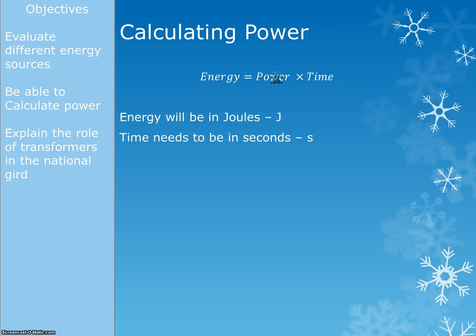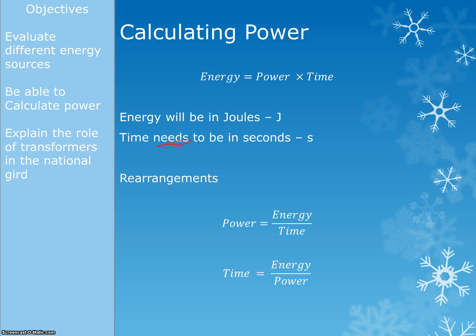The second equation we need is energy equals power times time. This comes from the definition of power — power equals energy divided by time. The energy will always be in joules, but the time needs to be in seconds. They might give it in minutes or hours, and you have to remember to convert it to seconds before putting it in the equation. We can rearrange to get power equals energy divided by time, or time equals energy divided by power.